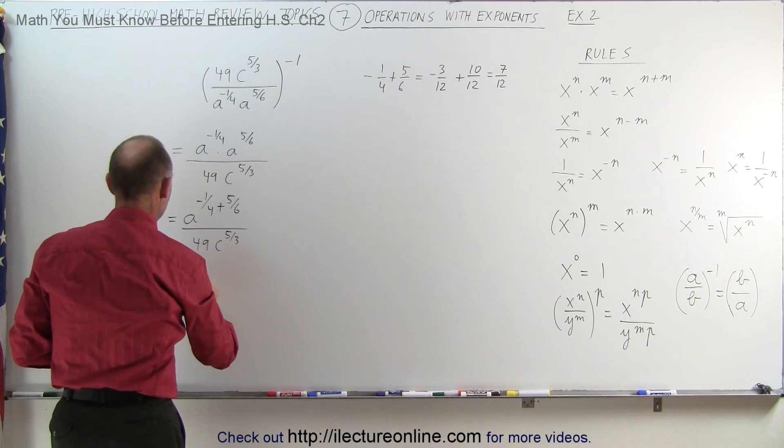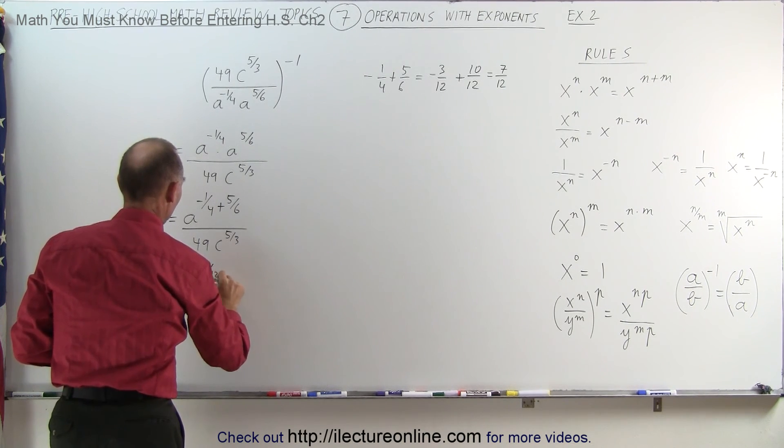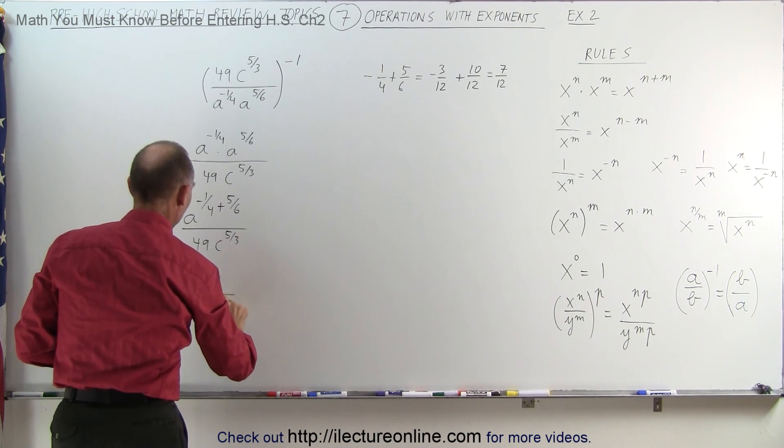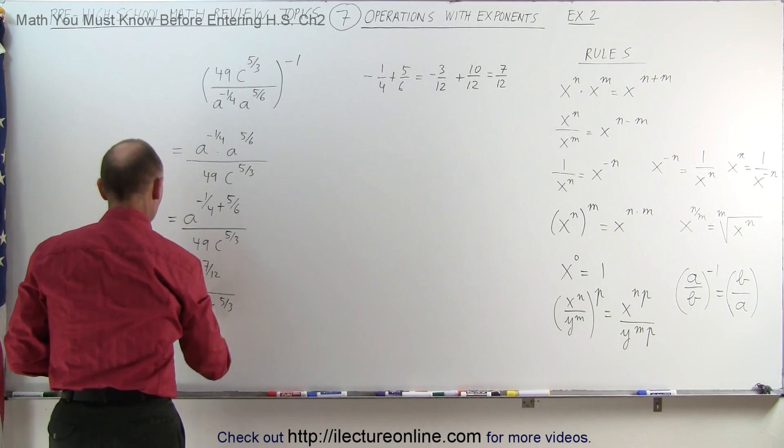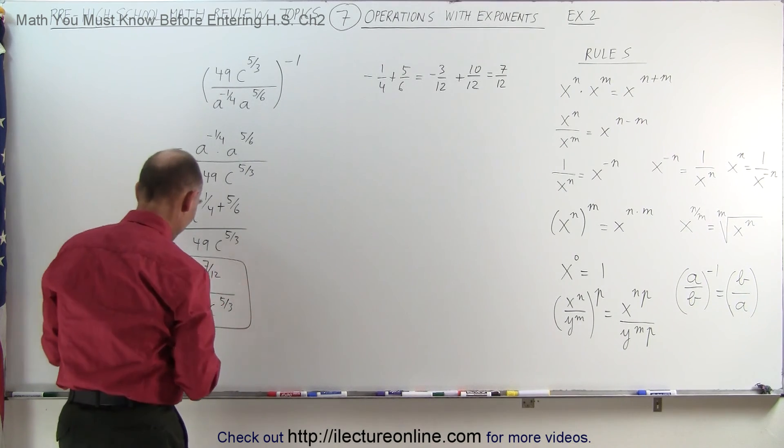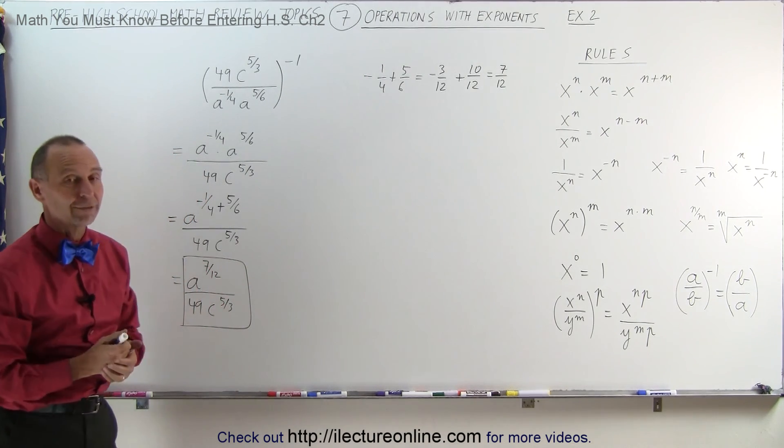So this is equal to a to the 7 twelfths, divided by 49c to the 5 over 3. And that would be the answer, or the final form of the answer for that particular expression.